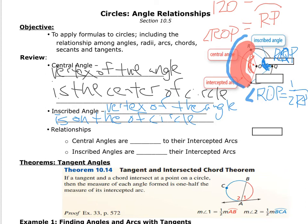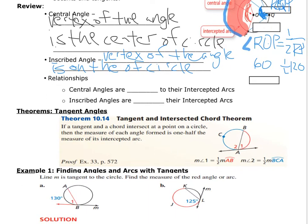The inscribed angle RQP is equal to one half of its intercepted arc RP. So if the central angle was 120 and arc RP equals 120, then half of 120 is 60 — so the inscribed angle equals 60 degrees. Central angles equal their intercepted arcs; inscribed angles are one half their intercepted arcs.